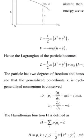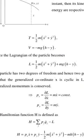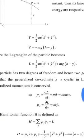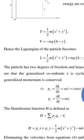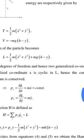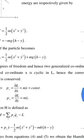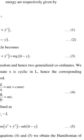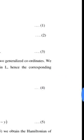Hence, the Lagrangian of the particle becomes: L = (1/2)m(ẋ² + ẏ²) + mg(h - y). The particle has two degrees of freedom and hence two generalized coordinates.